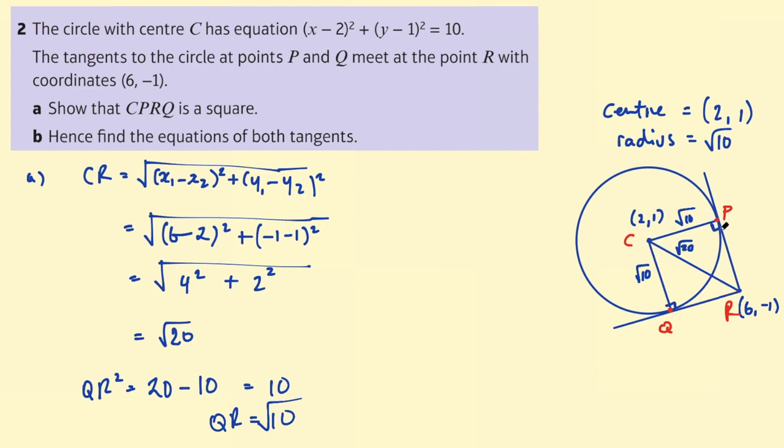Okay so we've shown QR is equal to CQ. All of the sides are the same. We could go ahead and do this whole process for PR, but hopefully you can see PR is of course going to be √10 as well. So all of the sides are the same. We know these two corners are both 90 degrees.